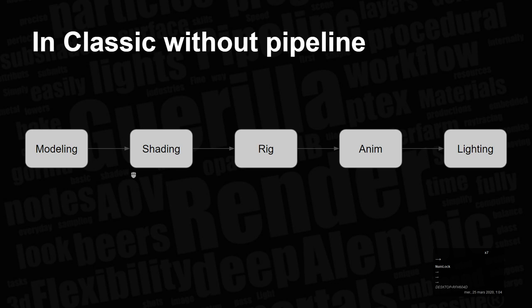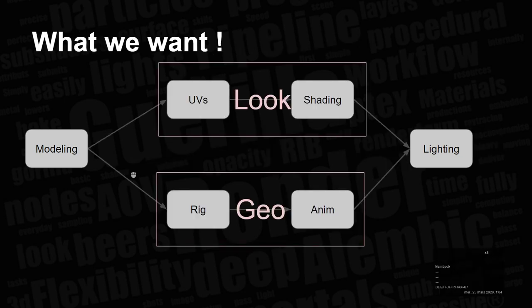We're going to start with the assembly part, because that's something that's not super simple for those not really into assembly. In the classic pipeline, the classic way of working, most of the time we work with modeling, shading, rigging, animation, and lighting, all connecting to each other. But to be more efficient in a pipeline, we want to divide the tasks and work on look development and animation separately. After that, we assemble everything to get one lighting scene to start working with.